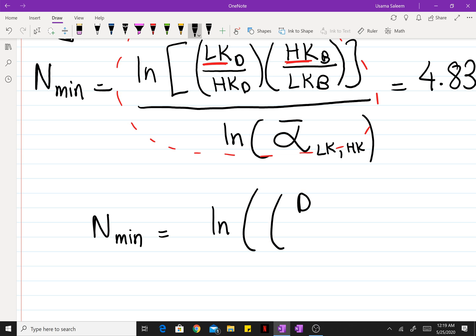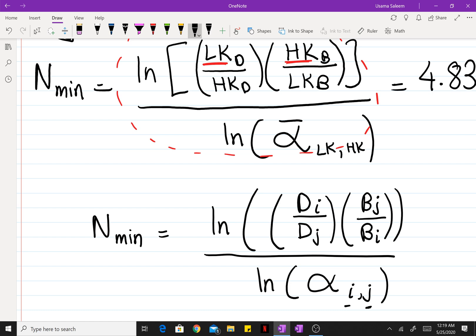The flow rate in the distillate of species I divided by the flow rate in distillate of species J, two different species, multiplied by the flow rate in the bottoms of species J divided by the flow rate of species I in the bottoms. And this entire term must be divided by the natural log of the average relative volatility of I with respect to J. Keep in mind that I has to be the lighter component and J has to be the heavier component.